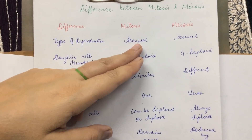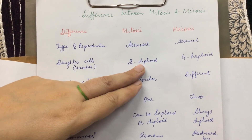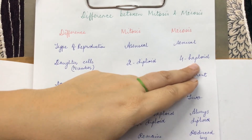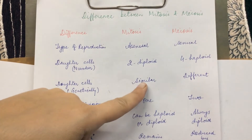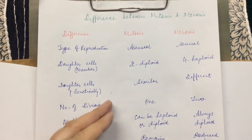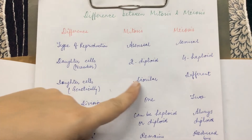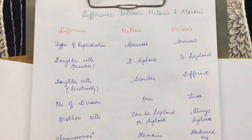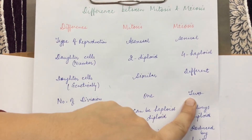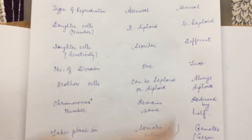Regarding daughter cells: 2 daughter cells are formed at the end of mitosis, and 4 haploid daughter cells are formed at the end of meiosis. Daughter cells are genetically similar in mitosis — there was no fusion of gametes, no zygote formation, so the same chromosomes are inherited. But they are genetically different in meiosis. Number of divisions: only 1 division in mitosis, but 2 divisions in meiosis — the 2 daughter cells divide again to form 4 haploid cells.